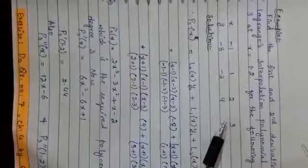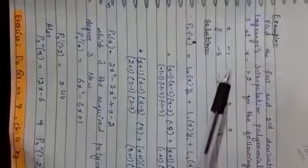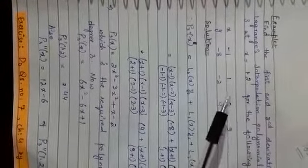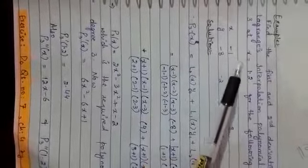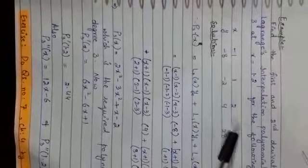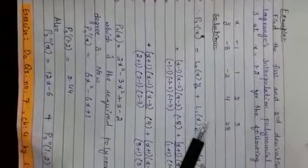This is the previous example that we have already done. First of all, what you have to do is find a polynomial of degree - they have already mentioned it, but if they wouldn't have mentioned it, then of course x0, x1, x2, x3, it means that I have to form a polynomial of degree up till 3.